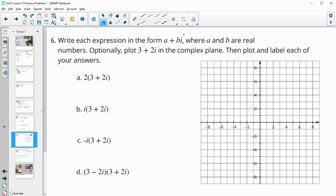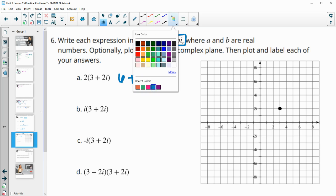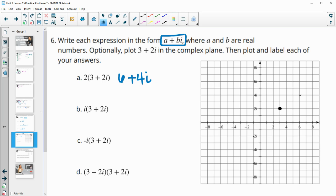Number 6, write each expression in this form. And then if you want to, you can plot it in the complex plane. So I'm just going to distribute the 2 here. So 2 times 3 is 6. And 2 times 2i is 4i. And so actually, let me plot this original. So 3 plus 2i is here. So here's the original. So now this new one is going to be at 6, 4i for part a.